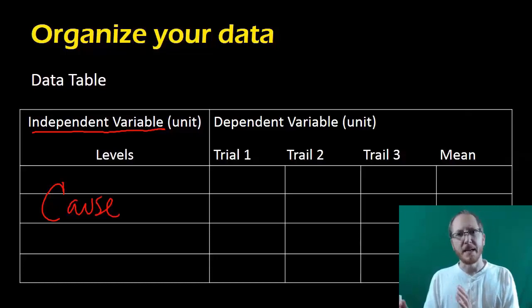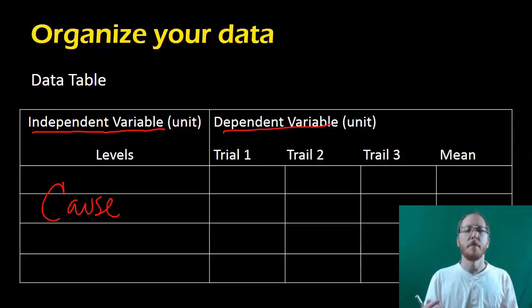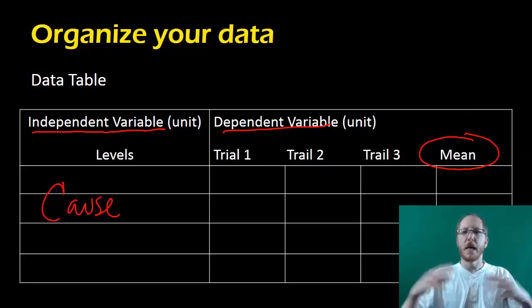And then on the right hand side, next to it, we're going to put the dependent variable. This might be multiples because you might do multiple different trials. So I might get a reading after one minute, two minutes, three minutes. And then you'll see that we averaged it, called the mean, at the end here. Because you normally want to make sure that there's not one weird measurement screwing stuff up. You want to get a lot of measurements and average them out to make sure it's accurate.